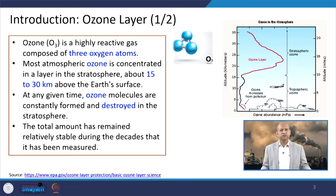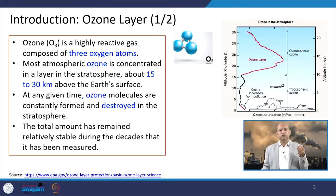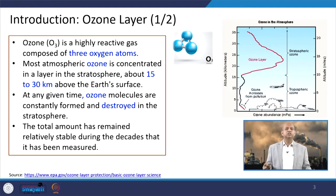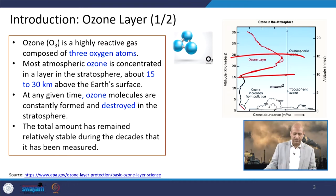Ozone is a very reactive gas with three atoms of oxygen, O3. In the atmosphere, it is present mainly in the stratosphere, where it forms a layer that protects us from ultraviolet rays. In the troposphere it is produced as a secondary pollutant. You can see that ozone concentration increases as we go up in altitude, peaking around 15 miles, and it forms quite a thick layer around 5 miles thick in the stratosphere.